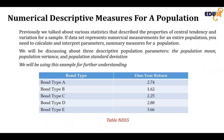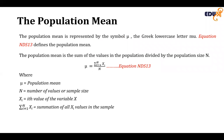Before we start, let's take an example. We have got four different bond types: bond type A, bond type B, bond type C, bond type D, and bond type E. For the one-year return, we have got 2.74, 1.62, 2.88, and 3.36. The population mean we need to calculate.